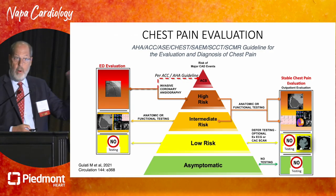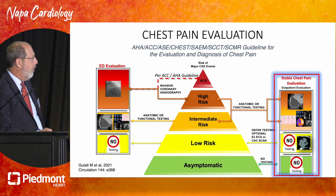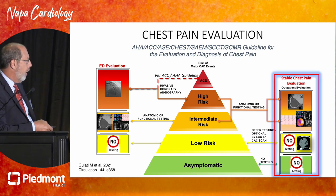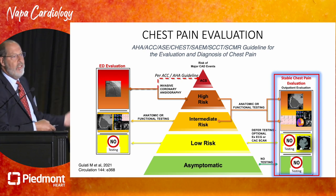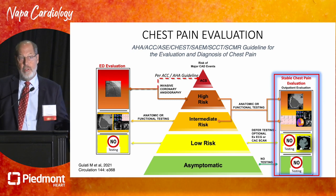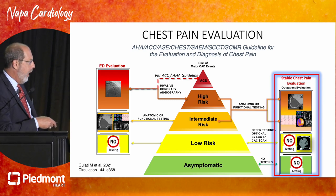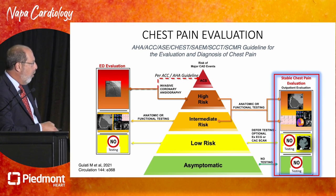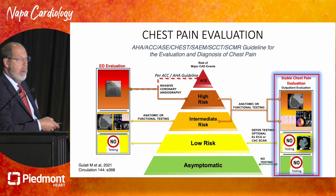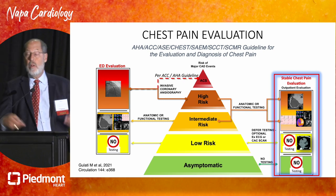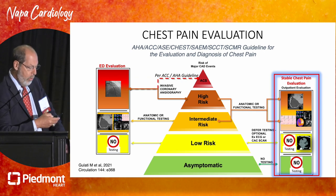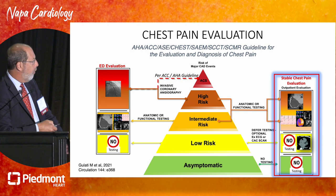Moving on to the other area, which is huge and very common: the stable chest pain syndromes. If it's an asymptomatic individual, they wouldn't be stable chest pain patients — we get into prevention. How you define asymptomatic is very important; an angina equivalent like dyspnea should be considered, and that would not be an asymptomatic individual. If you're a low-risk individual, perhaps deferral from testing. At intermediate risk, we need further evaluation, and at high risk it may need more aggressive approaches including invasive coronary angiography.